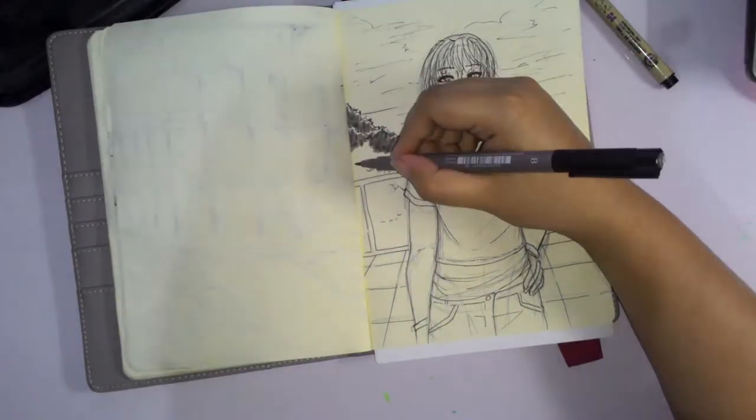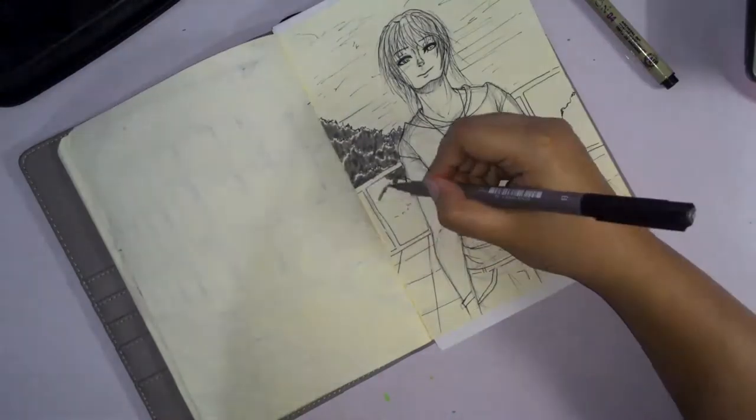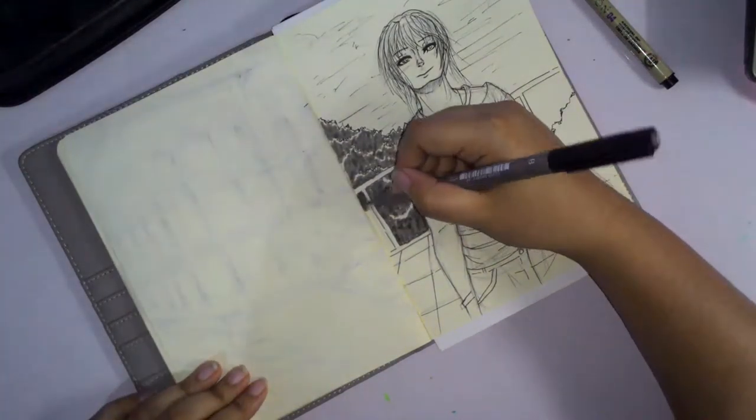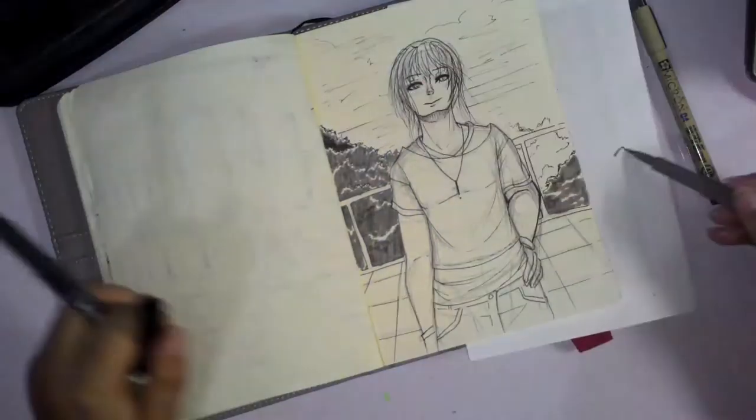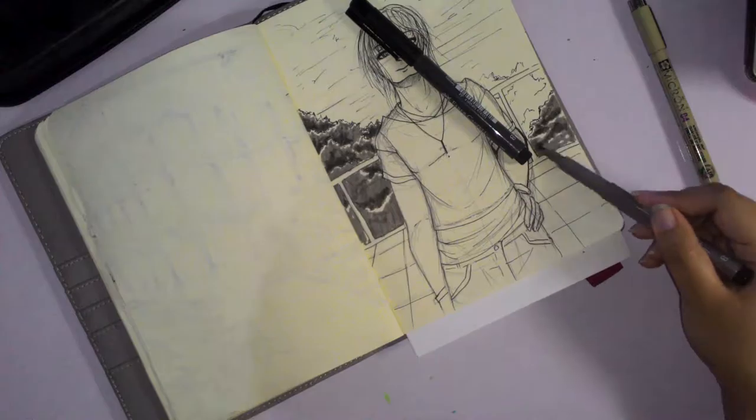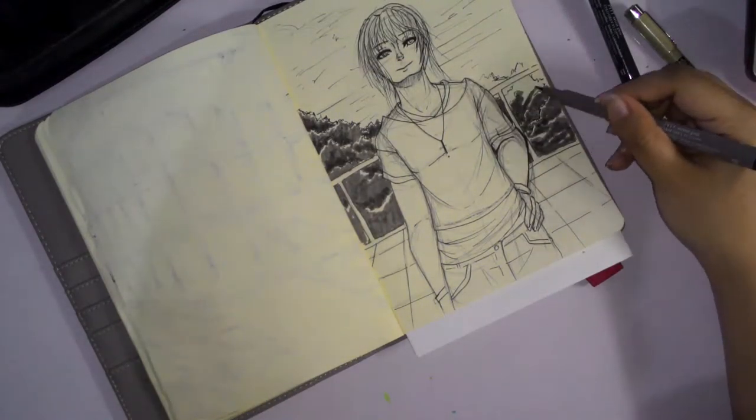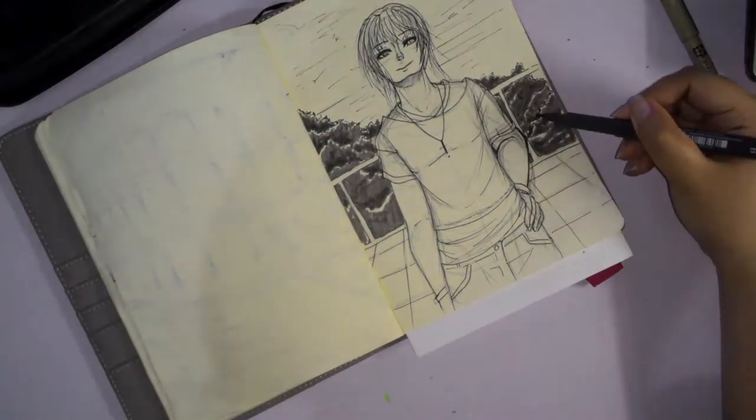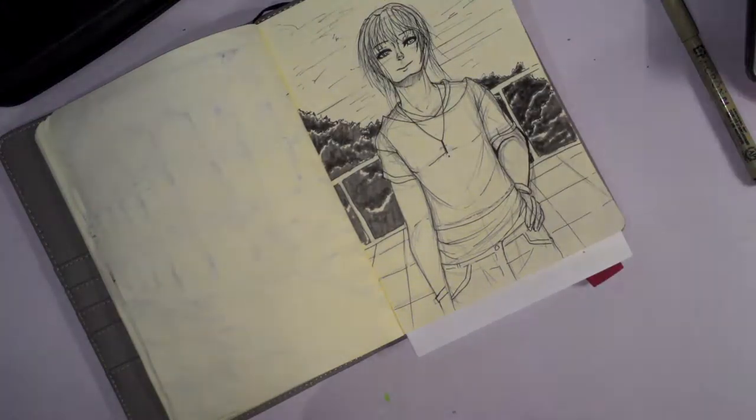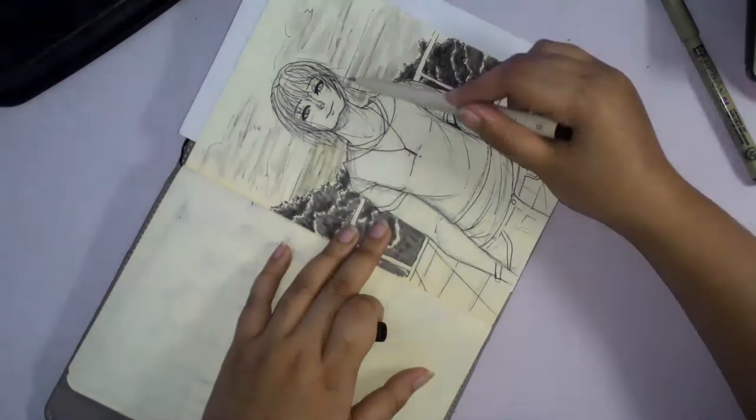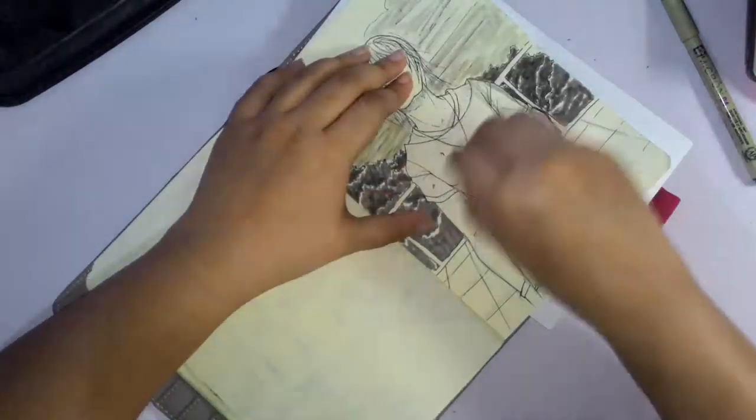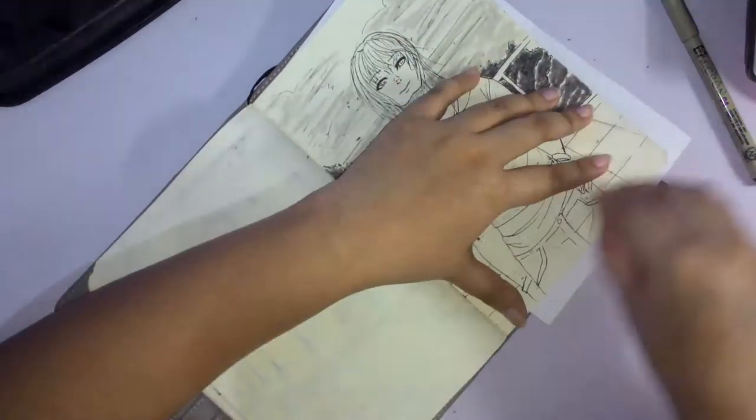I'm using the Faber-Castell Pitt Artist pens to add a bit of depth into things like the cheese, the clouds, and the sea behind him. Later on I'll be using a 6B pencil to create shading just because I miss using lead pencils to shade.